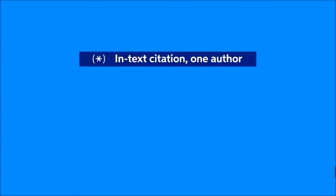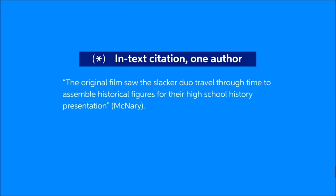The in-text citation for a website with an author is the author's last name in parentheses, followed by a period. Unless the website includes numbered paragraphs or sections, don't include any additional information. For the website used in the example before, the in-text citation would look like this, with McNary in parentheses after the last closing quotation mark, followed by a period.